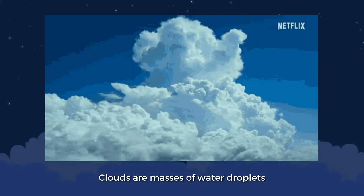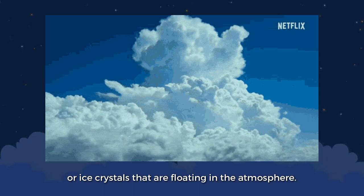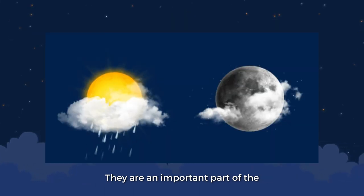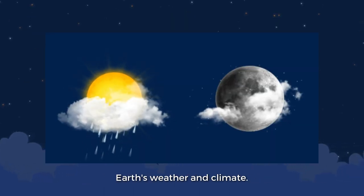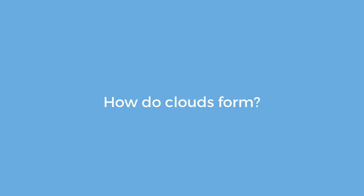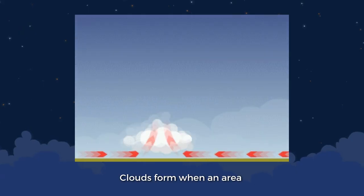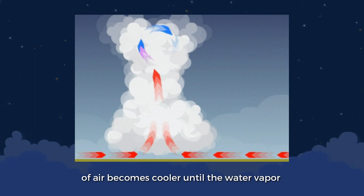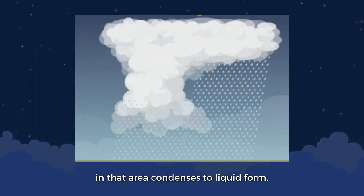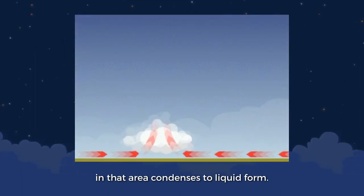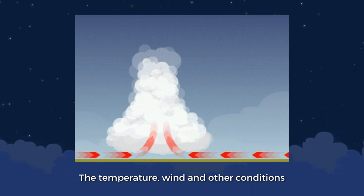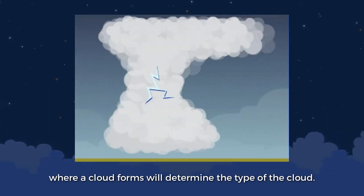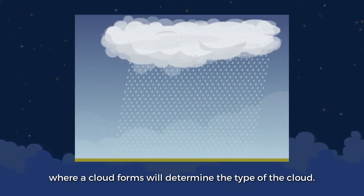Clouds are masses of water droplets or ice crystals that are floating in the atmosphere. They are an important part of the Earth's weather and climate. Clouds form when an area of air becomes cooler until the water vapor in that area condenses to liquid form. The temperature, wind, and other conditions where the cloud forms will determine the type of the cloud.